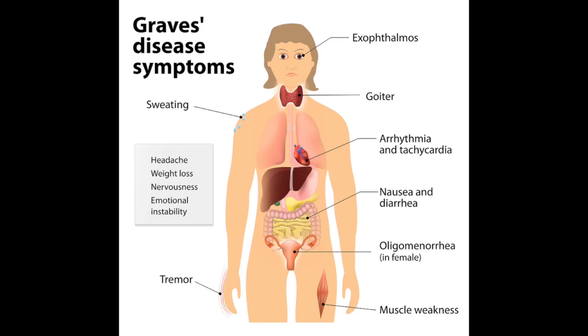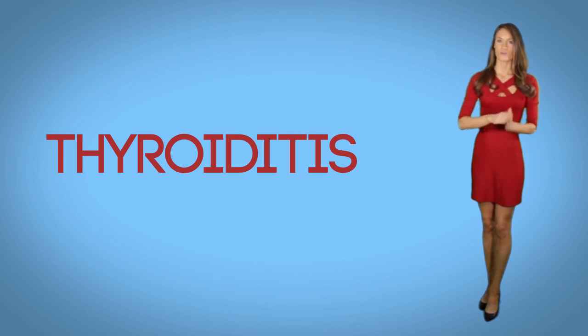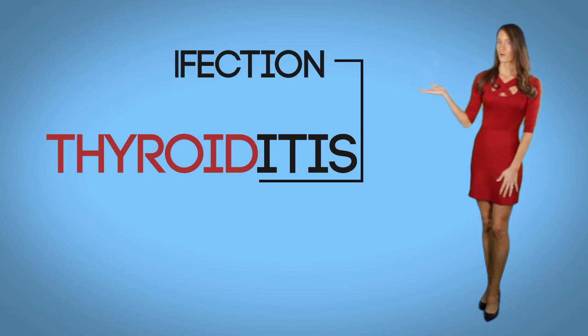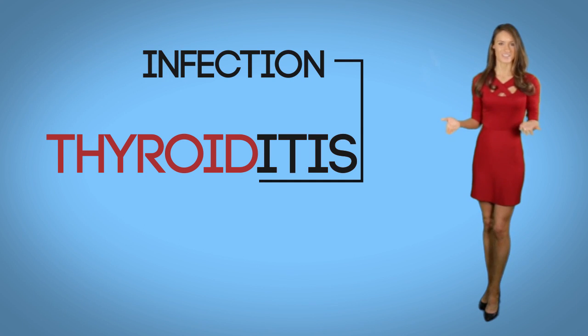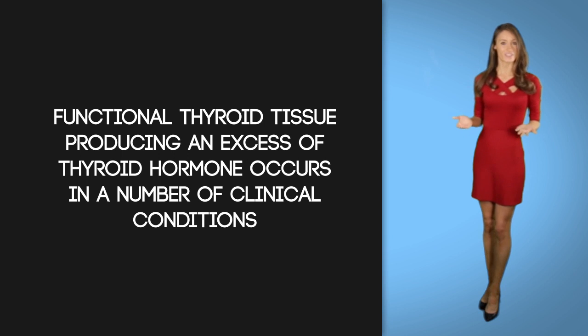The most common cause of hyperthyroidism is Graves' disease, an autoimmune disease where the body makes an antibody called thyroid-stimulating immunoglobulin, causing the thyroid to make too much thyroid hormone. Thyroiditis can be another cause — this is inflammation of the thyroid. Remember, whenever you see '-itis' at the end of a word, it means infection or inflammation. Functional thyroid tissue producing excess hormone occurs in a number of clinical conditions.